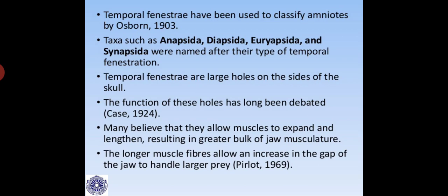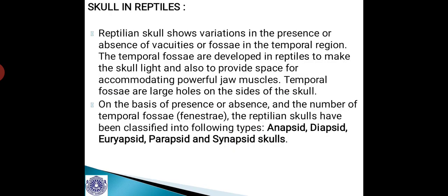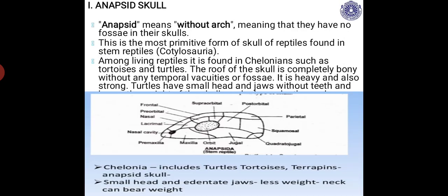The reptilian skull shows variations in the presence or absence of vacuities or fossa in the temporal region. Temporal fossa are developed in reptiles to make the skull light and to provide space for powerful jaw muscles. On the basis of presence, absence, and number of temporal fossa or fenestra, reptilian skulls are classified into Anapsid, Diapsid, Euryapsid, Parapsid, and Synapsid types.